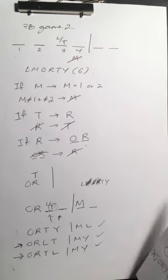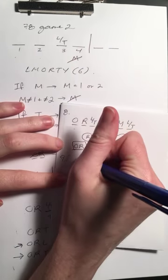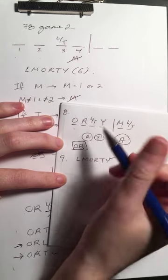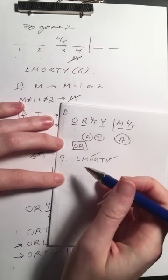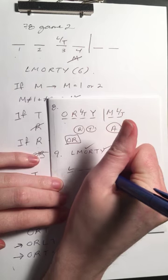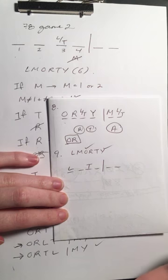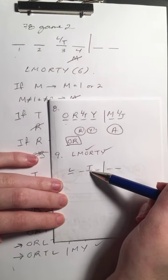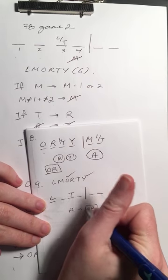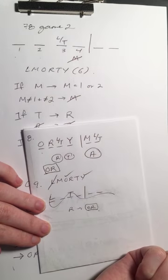We know Y and O could be assigned to 1921. Let's see if L could be. L or T is third, so T would have to be third. If T is in then R has to be in, and if R is in then O has to be right before R — but we don't have room for that. So L can't be 1921.